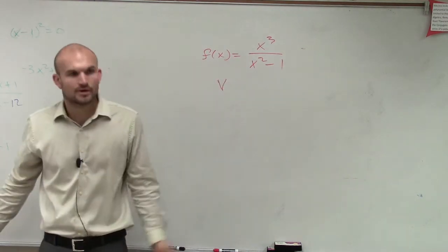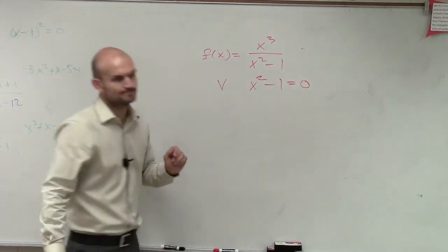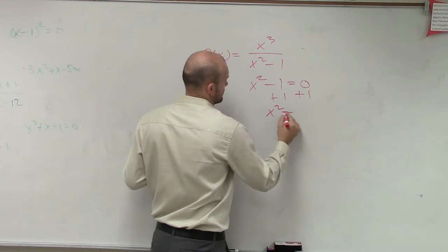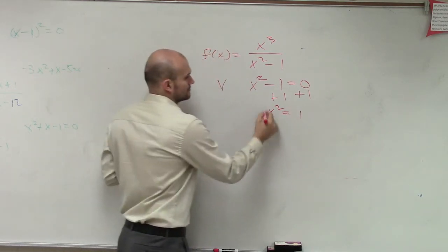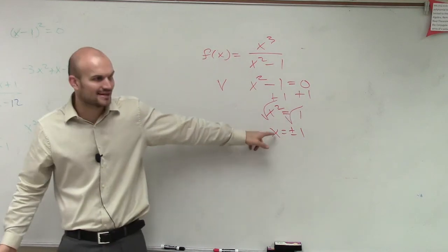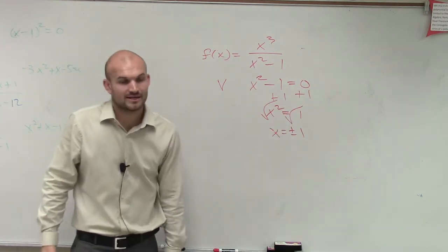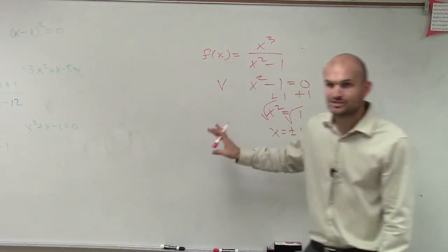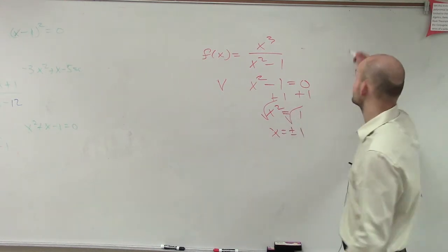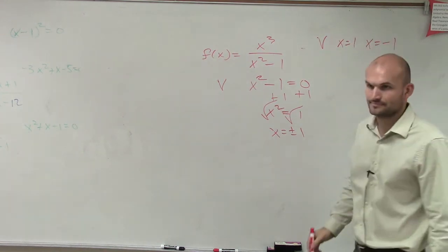To find the vertical asymptote — you guys remember — set the denominator equal to 0 and solve. So when we set the factor equal to 0, it's plus or minus. Remember when I got so mad at you guys for not doing plus or minus? It's going to kill you in this section. If you don't do plus or minus, you eliminate a whole vertical asymptote. So your vertical asymptotes are x equals 1 and x equals negative 1.